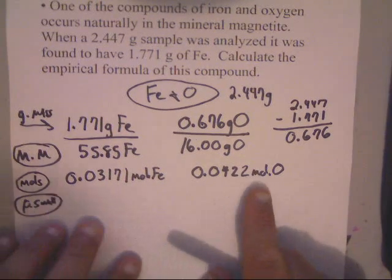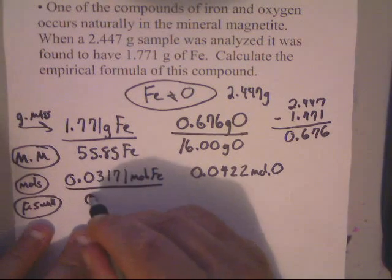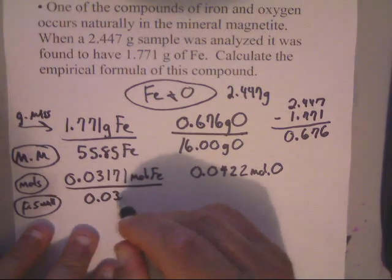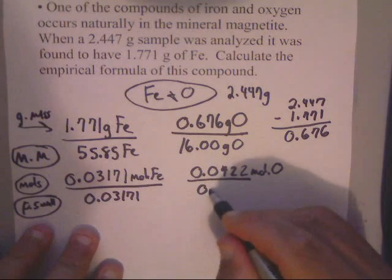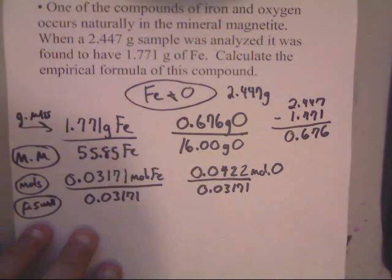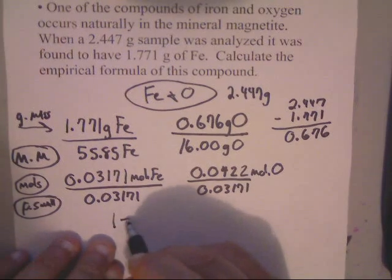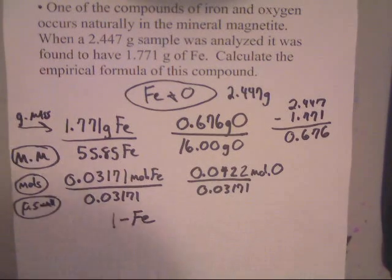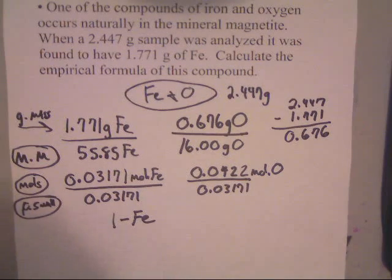So we're going to take the smallest one and we're going to divide by the smallest one. So that'll give us 0.03171. Now, looking at that, this will give us just one Fe. There's just one Fe atom there. If we're dividing a mole by mole, that's just one Fe.